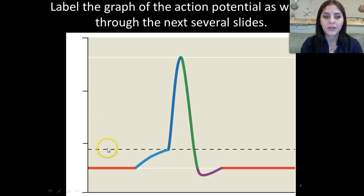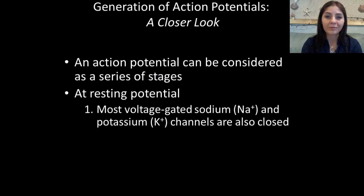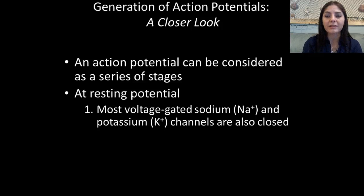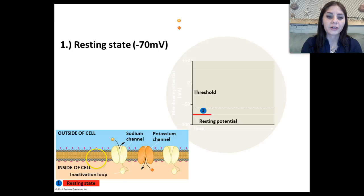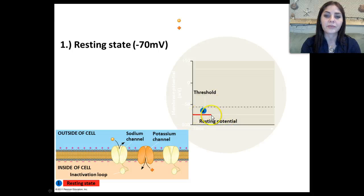An action potential can be considered as a series of stages. The first stage is the resting potential, where most of the voltage-gated sodium and potassium channels are closed. The only thing working at this time is the sodium-potassium pump; the channels themselves are closed. Our resting state is going to be at negative 70 millivolts.